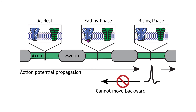Action potentials only move in one direction, from the cell body to the presynaptic terminal. The refractory period keeps the action potential from moving backward down the axon. As the action potential moves from one node of Ranvier to the next, the inactivated sodium channels in the previous axon segment prevent the membrane from depolarizing again. Therefore, the action potential can only move forward toward axon segments with closed sodium channels ready for the rising phase depolarization.